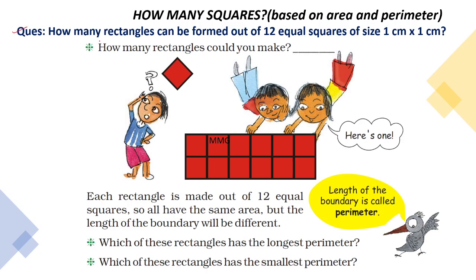The first question is: how many rectangles can be formed out of 12 equal squares of size 1 cm into 1 cm? Here you can see this square, and as you all know, in a square all sides are equal. In this square, each side is of 1 cm, as already given in the question.